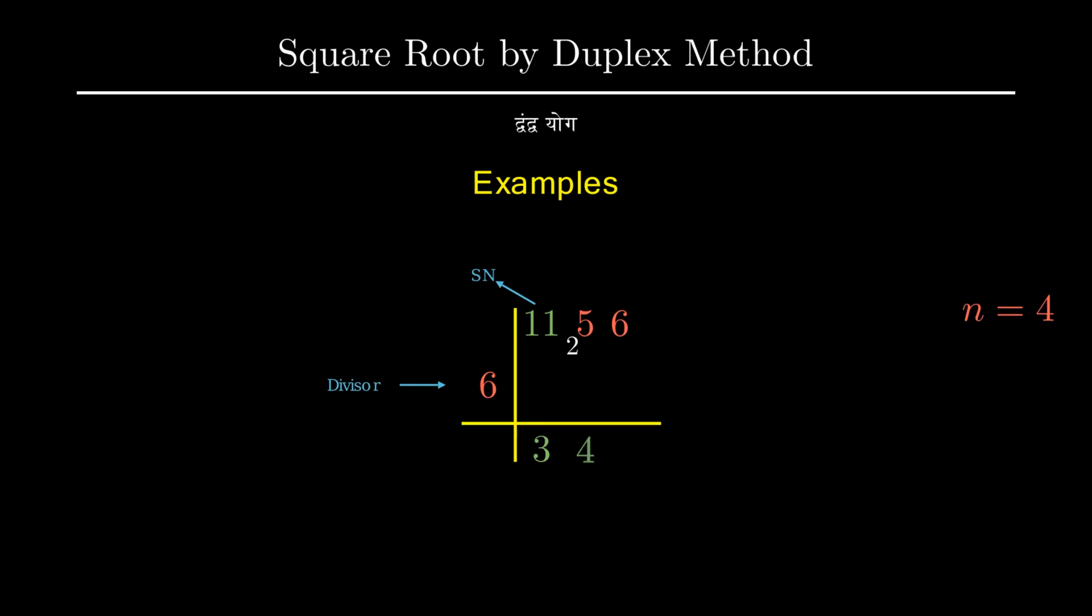Now our starting number has changed from 11 to being 25. We will now divide this starting number by the divisor and the quotient will be the next digit of our final answer. The remainder is again shifted to the base of the digit on the right hand side.